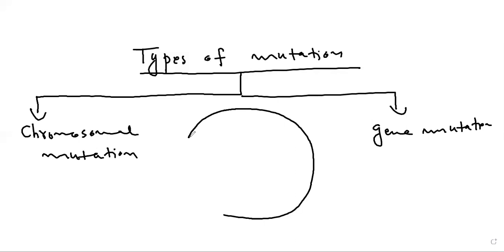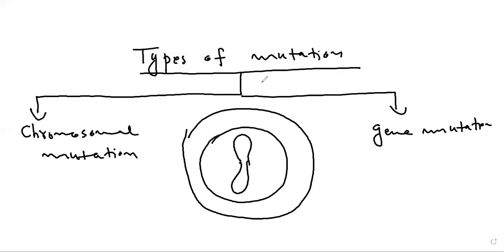Let's review: inside your cell is a nucleus, inside the nucleus are chromosomes, and inside the chromosome is DNA. Chromosomal mutation occurs when the chromosome structure changes — for example, a part of the chromosome breaks down — or when the number of chromosomes changes. Both of these are called chromosomal mutations.